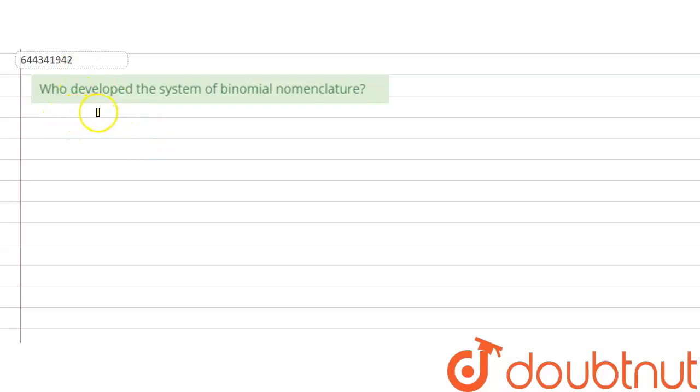Hello students, so let's start exploring the question. The question says who developed the system of binomial nomenclature? So basically in the question they are asking about the person who developed this system.